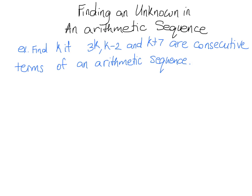So we have in this sequence 3k, k minus 2, and k plus 7. So let me rewrite that here: 3k, k minus 2, and k plus 7.